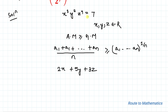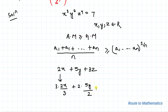We are given x³y²z⁴ = 7. In order to get x³ in the GM side, we need to take 3 terms of x, so we write 2x as 3 × (2x/3). Similarly, to get y² in the GM side, we take 2 terms of y, writing 5y as 2 × (5y/2). And to get z⁴, we write 3z as 4 × (3z/4).